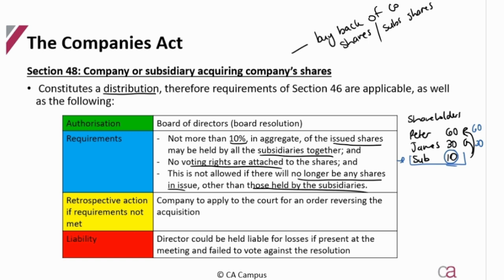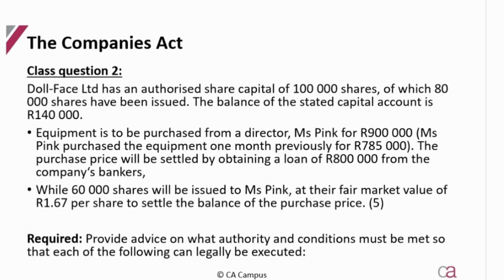If those requirements are not met — for example, if the buyback left only the subsidiary holding issued shares — the company must apply to the court for an order reversing that acquisition. The board would be held liable because they were aware or should have been aware of the buyback situation, and directors present who failed to vote against the decision could be held personally liable.